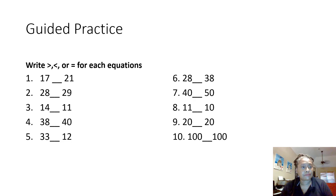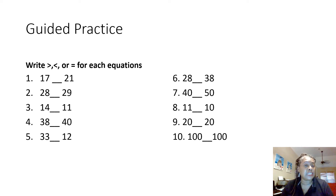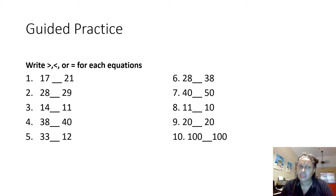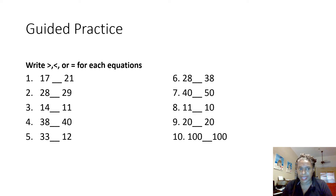Guided practice — we're going to do these together. We're looking at seventeen and twenty-one. Looking at the tens place, we see one ten and two tens, so seventeen is less than twenty-one. Next: twenty-eight and twenty-nine. We have two tens in both, so we can't use the tens rule this time — we have to go to the ones place. Eight or nine — which is bigger? So twenty-eight is less than twenty-nine.